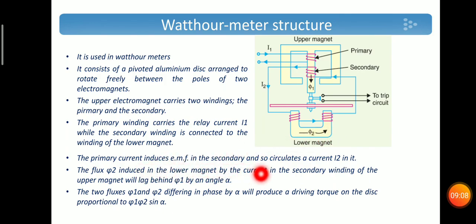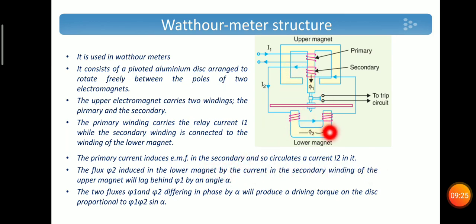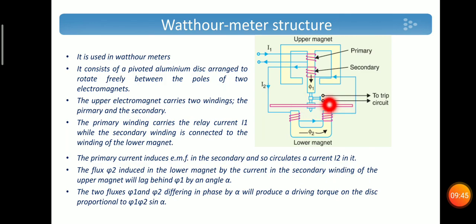The primary current induces an EMF in the secondary and circulates current I2 in it. The flux phi-2 induced in the lower magnet by the current in the secondary winding of the upper magnet will lag phi-1 by an angle alpha, creating a phase difference between the flux produced in the upper magnet and the lower magnet. This gives a driving torque of phi-1 · phi-2 · sin(α), and as the disc rotates to a certain angle, the trip circuit gets closed.